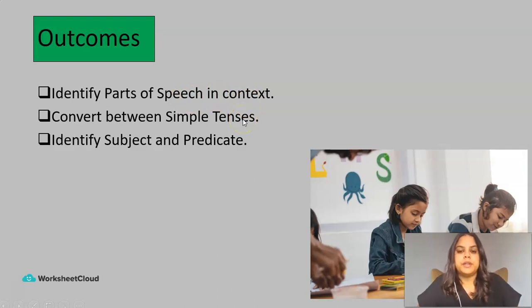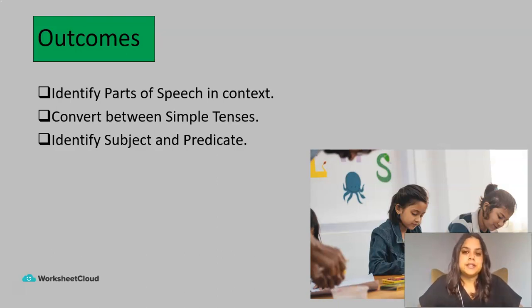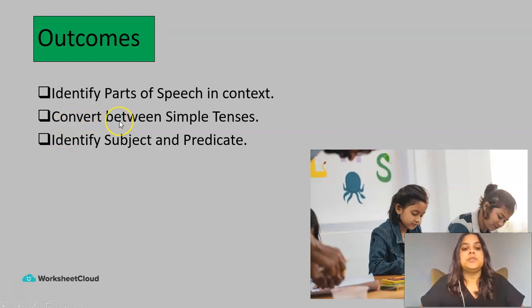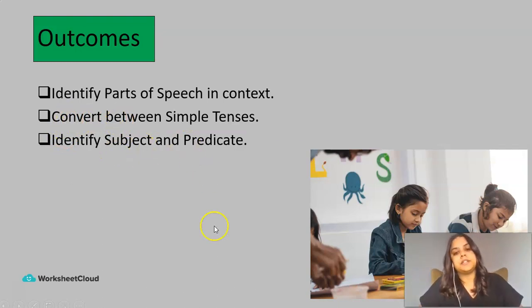How is that different from what we've done previously? Well, we focused on nouns previously and took them out of context — we wanted to be able to learn how to identify those nouns. But for these activities, we're actually going to be looking at different sentences and how we'll be able to break up those sentences into their parts of speech. We're also going to cover converting between simple tenses and then identifying subject and predicate.